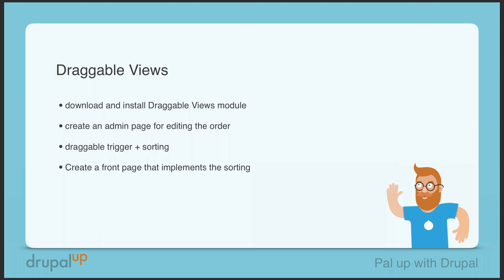In this video we're going to be taking a look at Draggable Views. We're going to download and install the Draggable Views module, create an admin page for editing the order, set the trigger and the sorting, and create a front page that implements the sorting. Draggable Views basically enables us to create an admin page with drag-and-drop where we can control the order of articles.